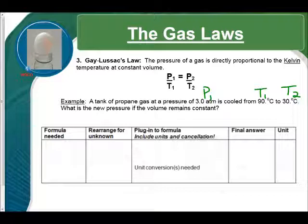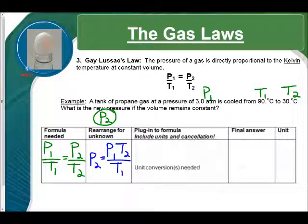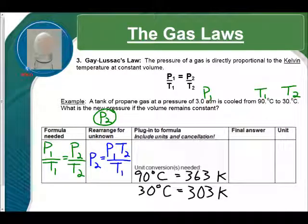So, because we don't have volume involved, we're going to use P1 over T1 equals P2 over T2. And when we rearrange for our unknown, it is P2 equals P1 times T2 divided by T1. Okay. So, if we look at our problem, do we need to make any unit conversions? Yes. We have to get rid of those Celsius temperatures. So, we've got to convert them to Kelvin like this. 90 degrees Celsius becomes 363 Kelvin. 30 degrees Celsius is the same as 303 Kelvin. So, now we can plug everything in and figure out what our answer is.